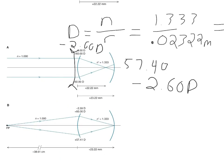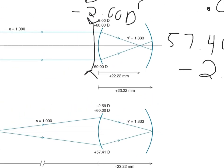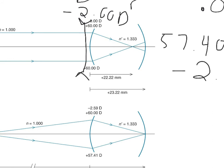Here is a representation of that. The textbook shows minus 2.59, which is close enough to 2.60 — it's just rounding. I round off a little differently. So if you place an eyeglass prescription right on the cornea of minus 2.59 diopters, then the focal point falls onto the retina.